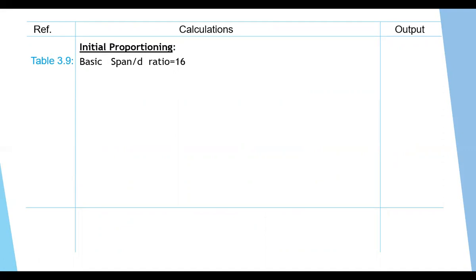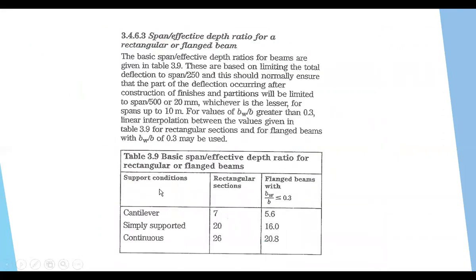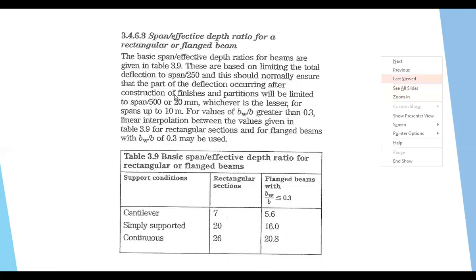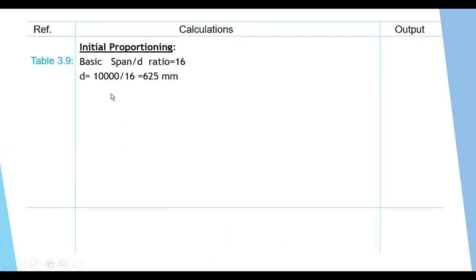Always we have to start by initial proportioning to find the dimensions of the beams. From table 3.9, for a simply supported flanged beam, the basic span-to-depth ratio is 16. So the minimum effective depth D equals the span of 10 meters divided by 16, giving us 625 mm.